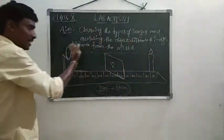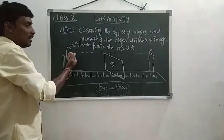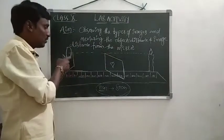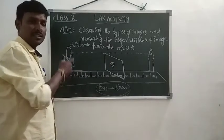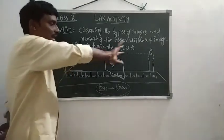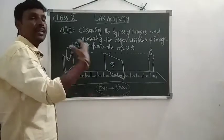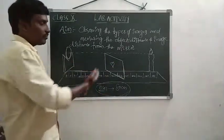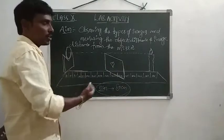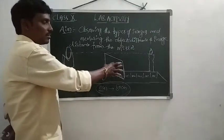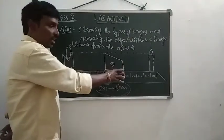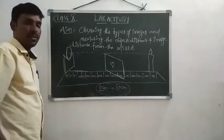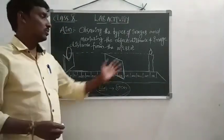The rays coming from the flame of the candle are incident on the concave mirror. The mirror reflects the light, and we will get the image in front of the mirror on the screen. That is why we place the paper — the screen — between the object and the mirror.